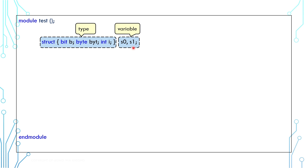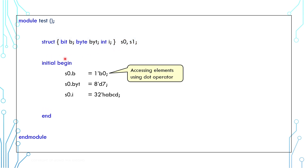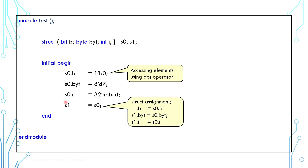Now you have two structure variables, s0 and s1. You can access a member of the structure by using the dot operator, such as s0.bit. Just like other types of variables, you can assign one structure value to another structure variable. In this case, all the bit, byte, and int in s1 will get their values from the respective bit, byte, and int from s0.